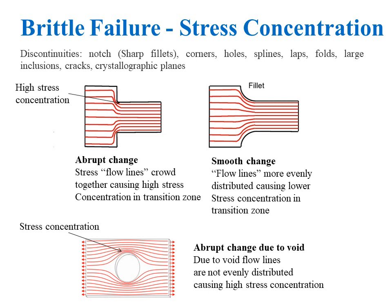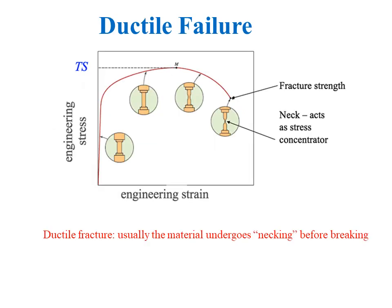Brittle failure is the worse type of failure because it involves the sudden failure of the material by rapid crack growth immediately after crack initiation — it is also known as fast failure. A classic example of ductile failure is the tensile specimen. Ductile failure provides some warning before failing: the material deforms, elongates, and decreases in cross-section before failure. This elongation and decrease in cross-section is referred to as necking — the material typically undergoes necking before breaking. Brittle failure, by contrast, is quick and gives no prior warning.